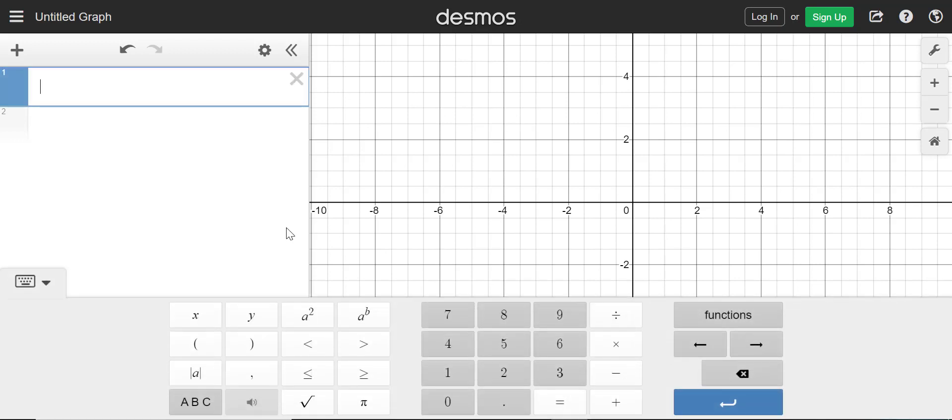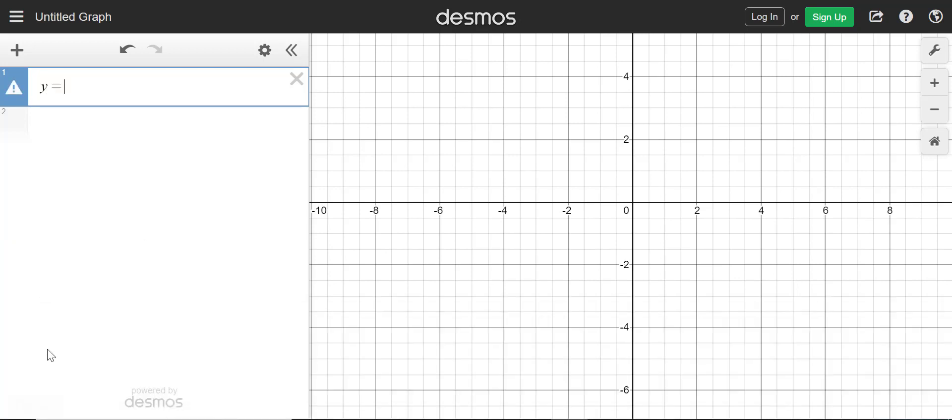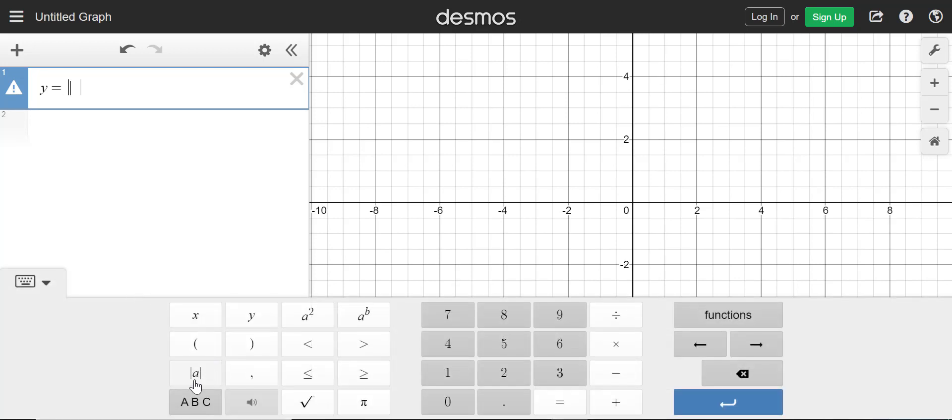So the first thing we're going to do is open up Desmos and type in the original parent function, which is y equals. And if you bring up the little keyboard, you can get the absolute value function. Type in absolute value of x.